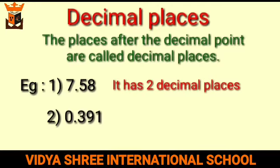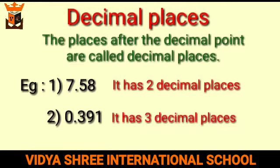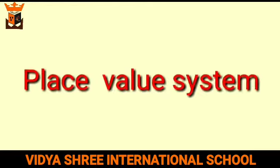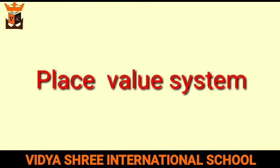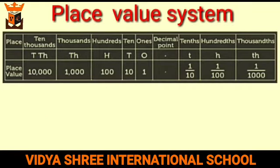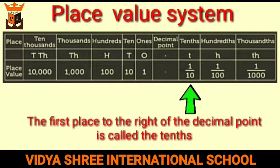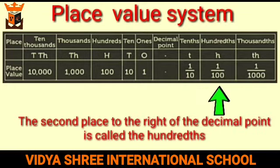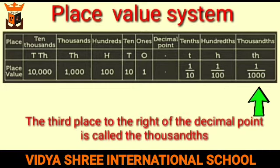Let us take one more example: 0.391 has three decimal places. Place value system: the table here shows that decimal numbers extend the place value system to the right of the ones place. The first place to the right of the decimal point is called the tenths. The second place is called hundredths. The third place is called thousandths.